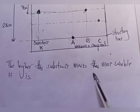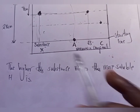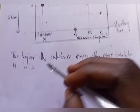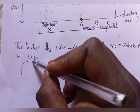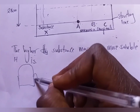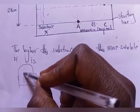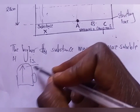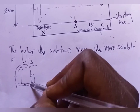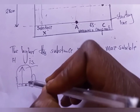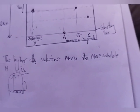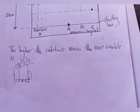The higher the substance moves down, the more soluble it is. So if it is up here at the top, it means it is insoluble. But the further it goes down, the more soluble the substance is. So you can determine relative solubility by how far down each substance has traveled.